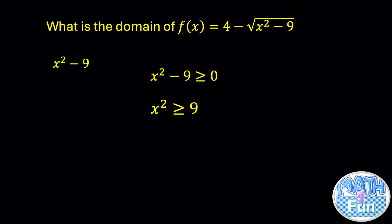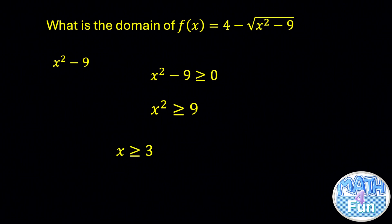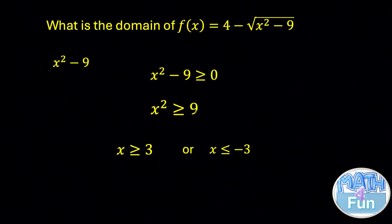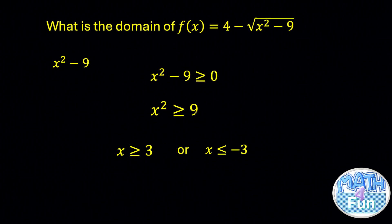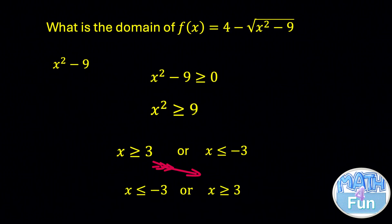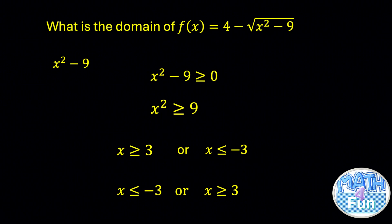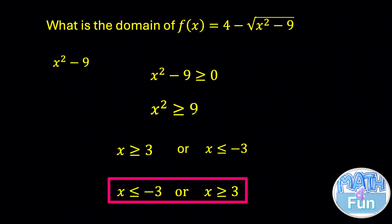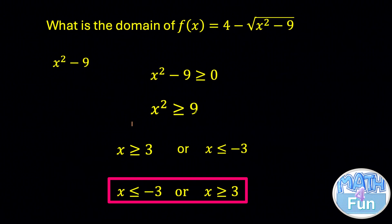From this form — which you may remember from grade 9 and 10 — x should be greater than or equal to the positive square root of 9, which is 3, or x should be smaller than or equal to the negative square root of 9, which is minus 3. This means the function is defined when x is greater than or equal to 3, or when x is less than or equal to negative 3. So the domain of this function is x less than or equal to negative 3, or x greater than or equal to 3.